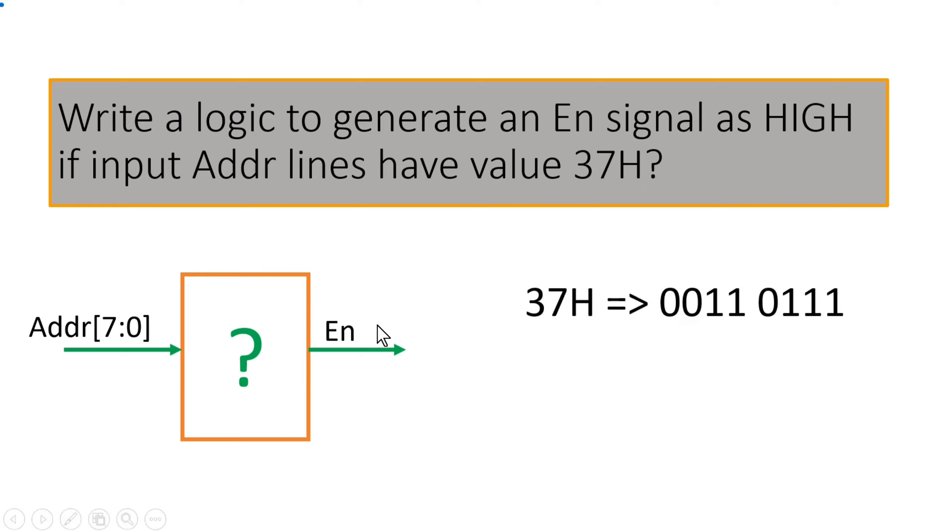In the very first step, you have to write the binary number of 37H, and from this binary expression it is very easy to get the final expression for the enable signal.